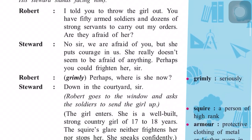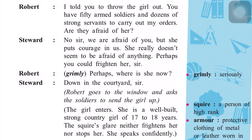Now let us start the scene. As you can see, the left side shows who is speaking and the right side has the dialogue. Robert says: 'I told you to throw the girl out. You have 50 armed soldiers and dozens of strong servants to carry out my orders. Are they afraid of her?' The steward replies: 'No sir, we are afraid of you, but she puts courage in us. She really doesn't seem to be afraid of anything. Perhaps you could frighten her, sir.' Robert, very grimly, says: 'Perhaps. Where is she now?' The steward says: 'Down in the courtyard, sir.' So Robert is very angry — some girl wants to meet him, he has told the steward to chase her away, but even the soldiers can't do it.